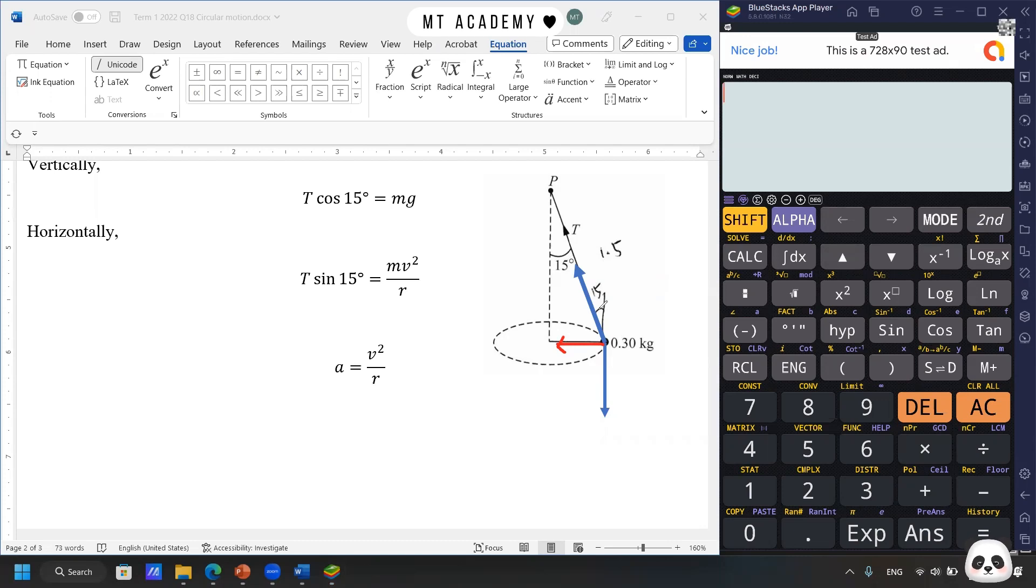So we can see that the centripetal force is provided by the horizontal component of the tension. So now what we're going to do is to create two equations. One is the vertical component. We can see the T cos 15° equals to mg. And then the next one is the horizontal component, it is the T sin 15° is the centripetal force mv² over R. So now we're going to solve for the speed. And we need to solve also the tension later on. So I guess we don't calculate, so we can ignore about the tension first.